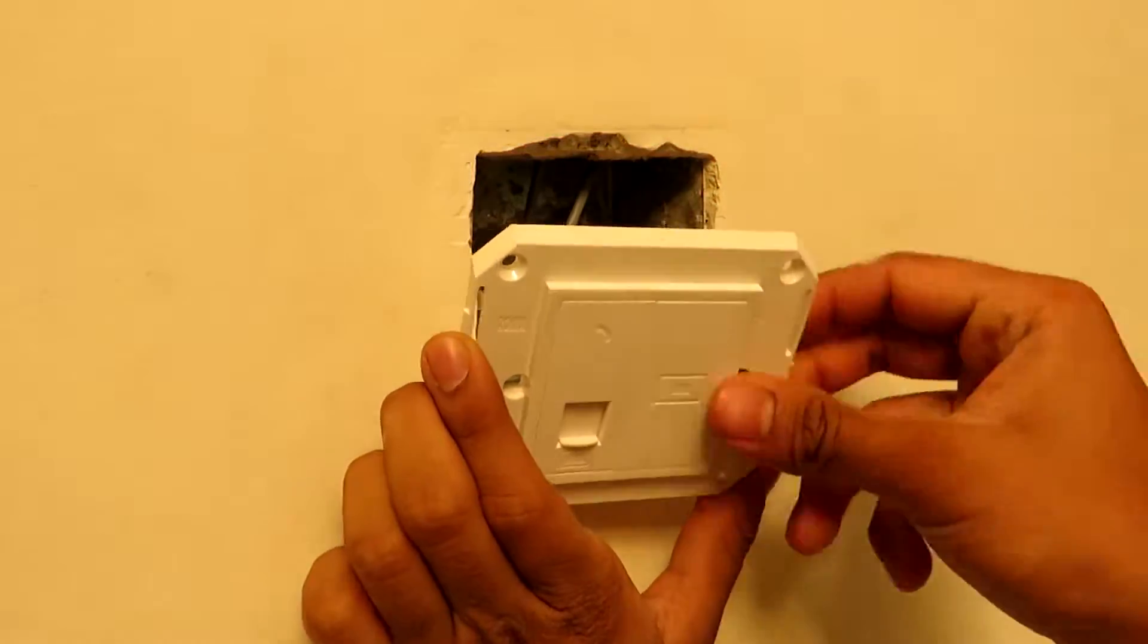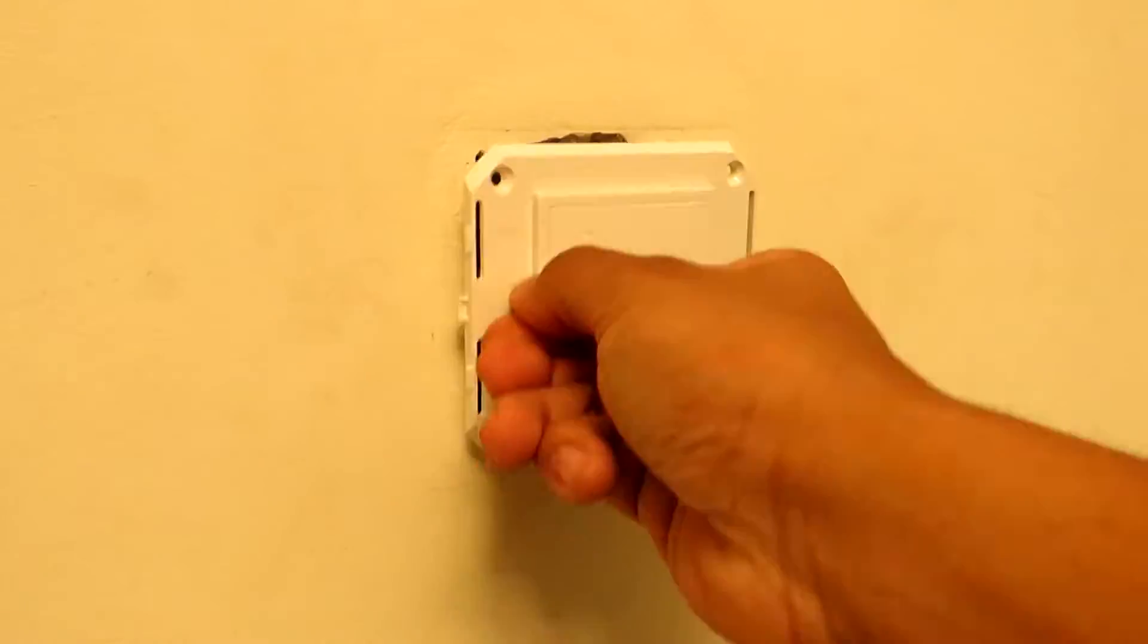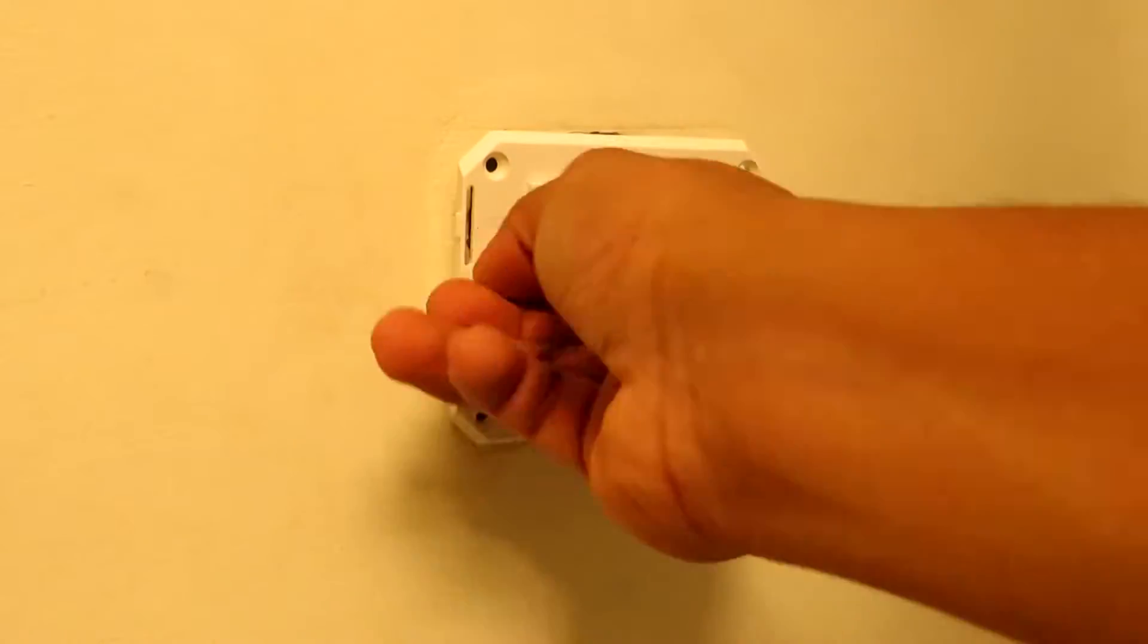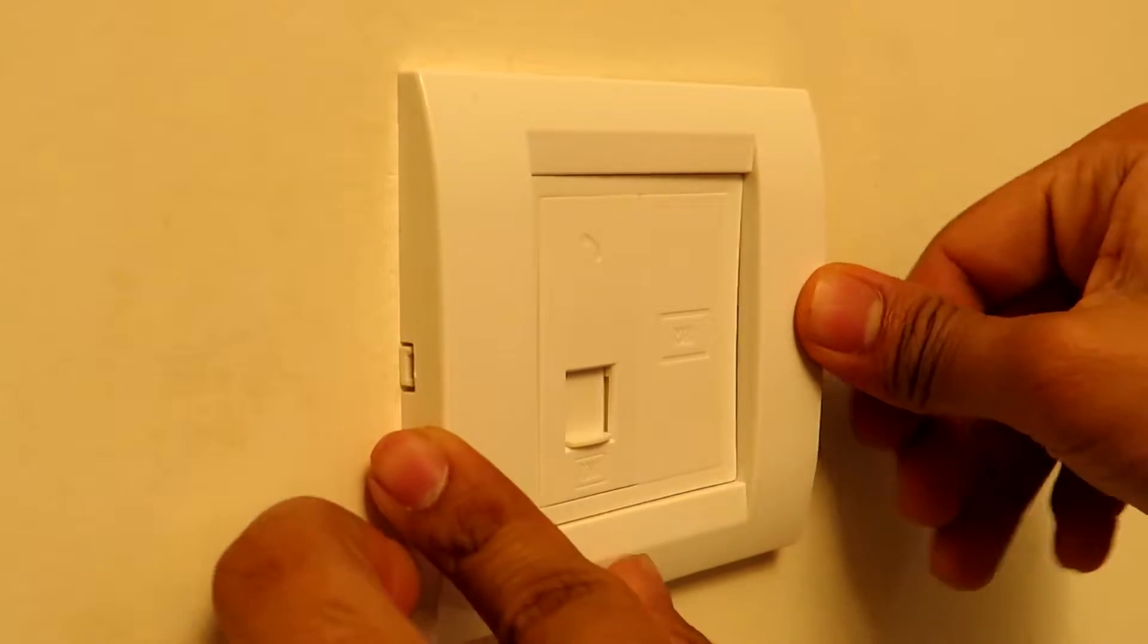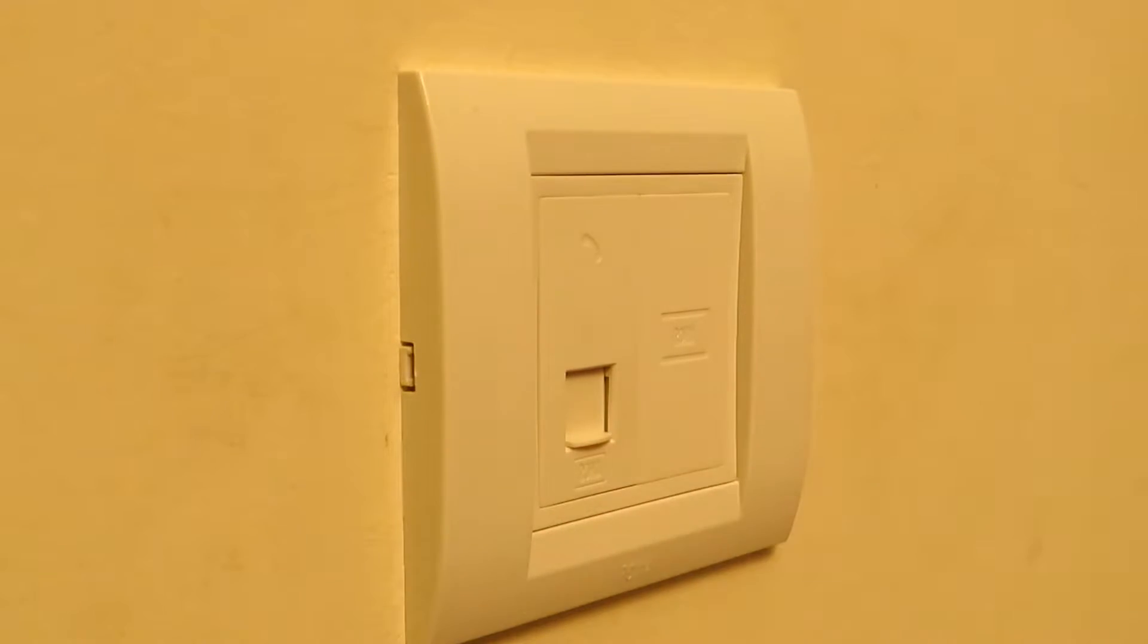So after connecting the wires to the terminals, I would advise that you connect a telephone first and test if the connection has been made correctly. If yes, then close the wall plate; otherwise you will have to simply remove the wall plate again if it's not working. And there you go, we have successfully connected our Roma RJ11 socket.